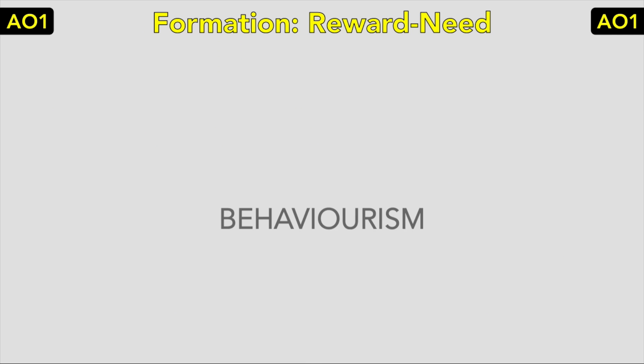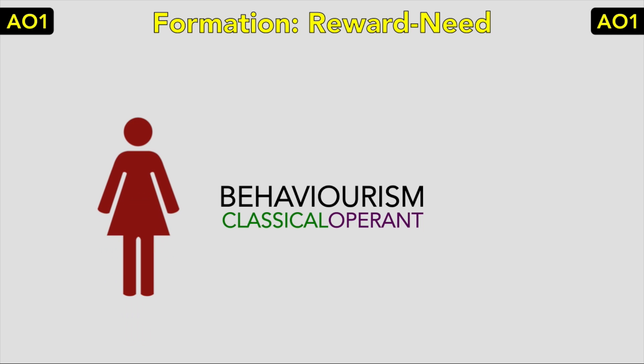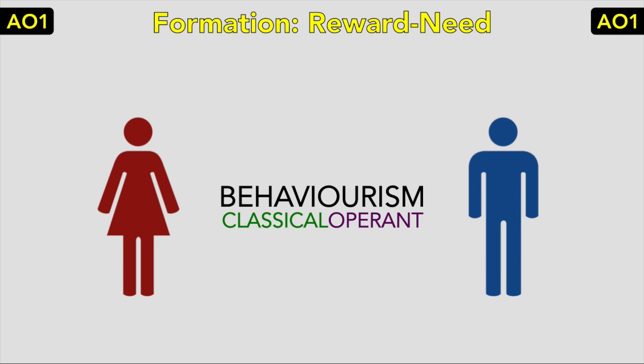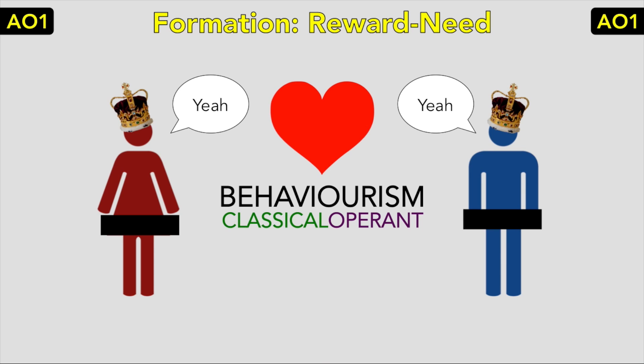This theory is based on the idea of behaviourism — classical and operant conditioning. Operant conditioning is learning by rewards, and this is the key reason why relationships are formed, because it is rewards that we receive from others. These rewards can include sex, status, love, help and agreement with our opinions. These may be rewarding because they meet our needs — for example, getting approval from others boosts our self-esteem. By operant conditioning, we like those who provide us with rewards and dislike those whose presence is negative.